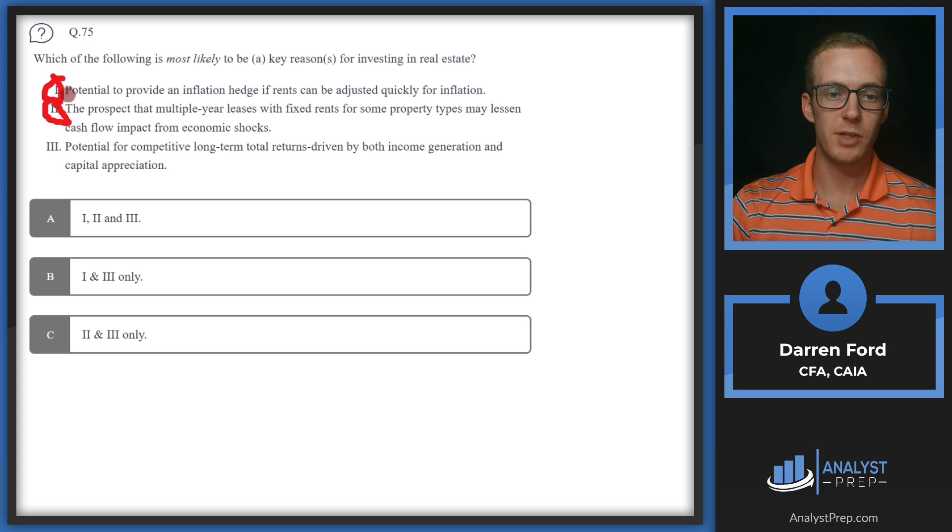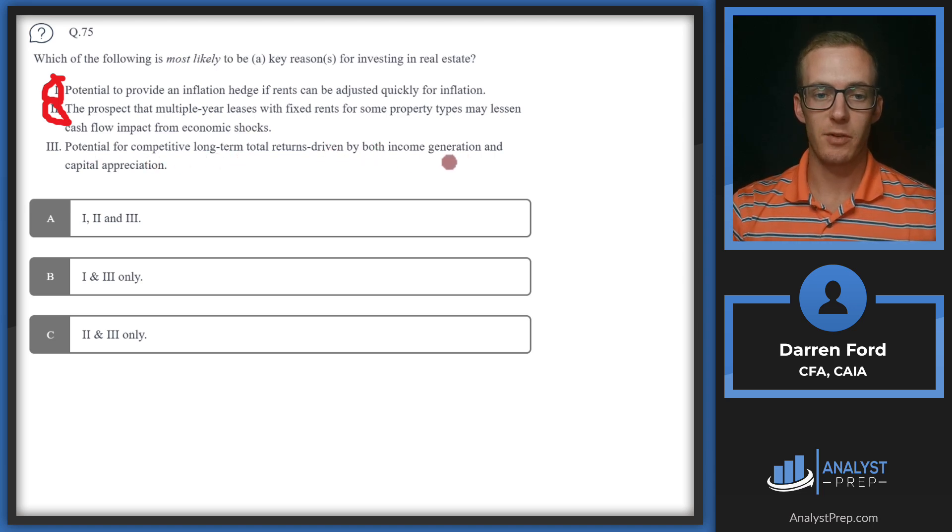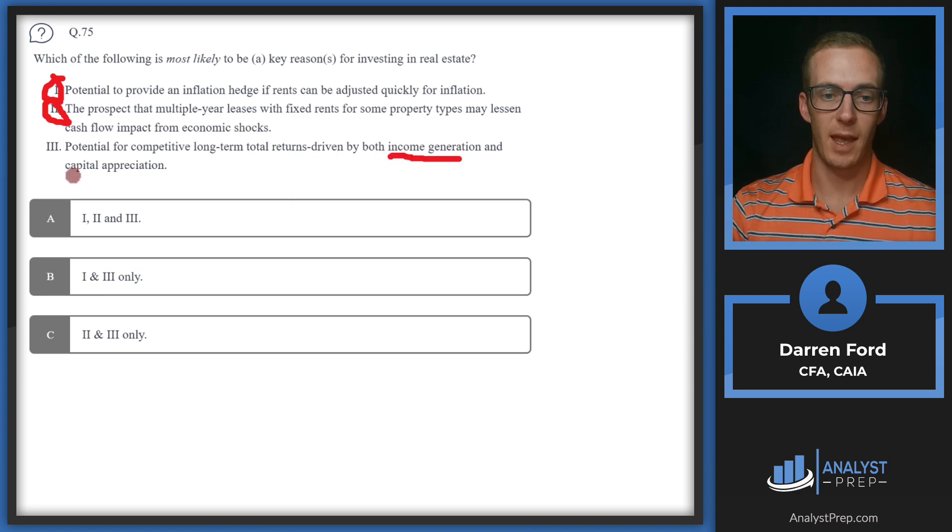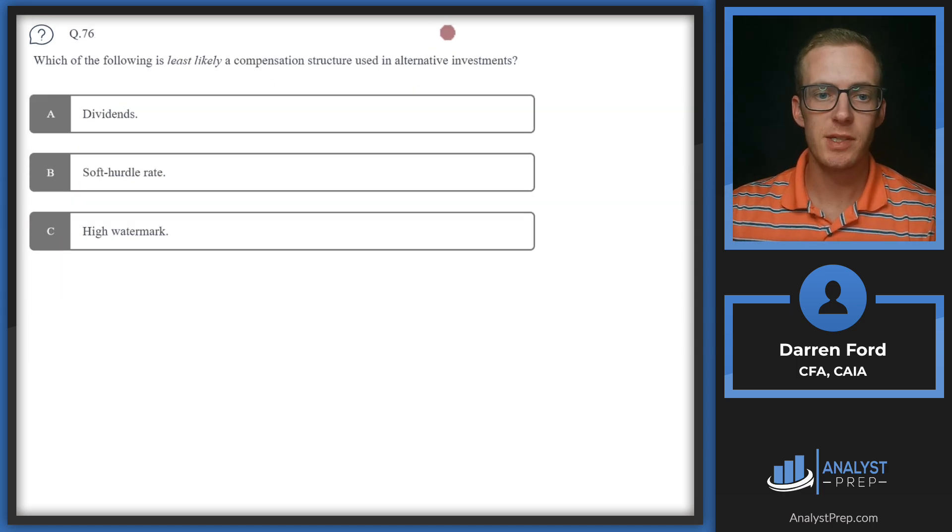Statement three: Potential for competitive long-term total returns driven by both income generation and capital appreciation. Real estate has benefits of both of these - income generation and capital appreciation. You can collect your rent money along the way and your property can also increase in value. So we'll go with A: all three of these statements are correct.